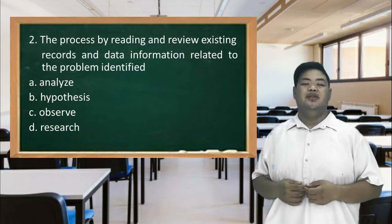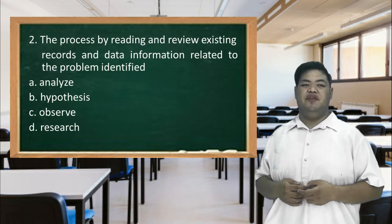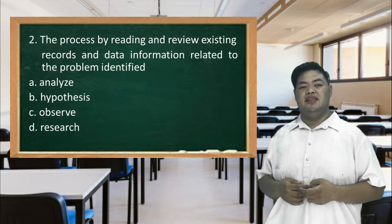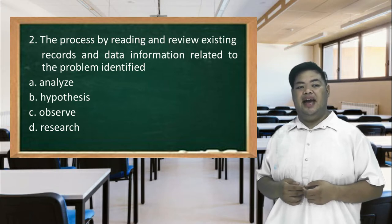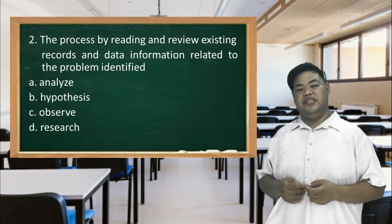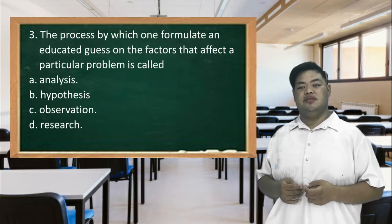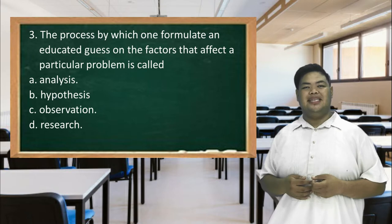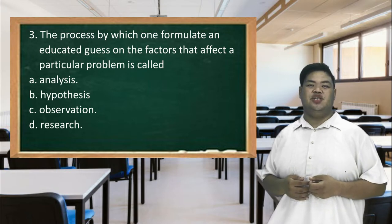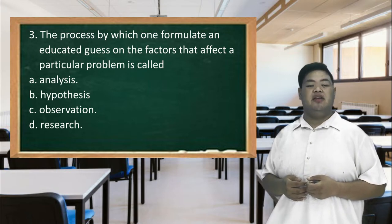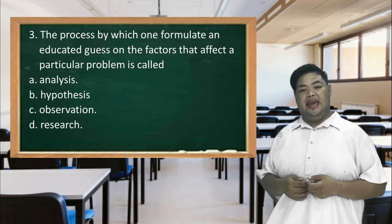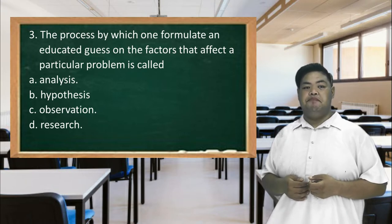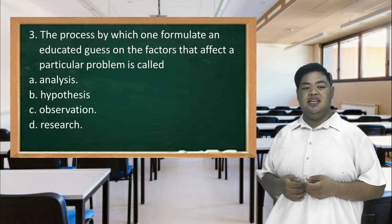Number 2. The process by reading and reviewing existing records and data information related to problem identified. Number 3. The process by which one formulates an educated guess on the factors that affect a particular problem is called: A. Analysis. B. Hypothesis. C. Observation. D. Research.